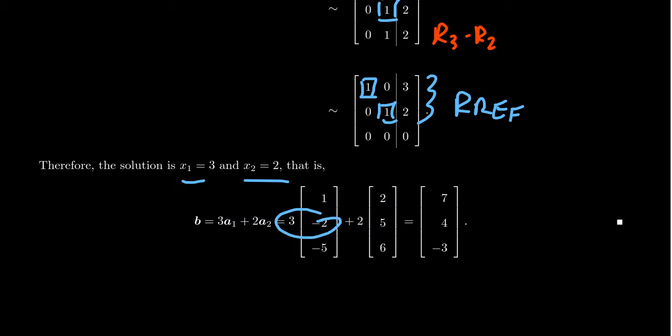3 times negative 2 is negative 6. 2 times 5 is 10. 10 minus 6 is 4. And then lastly, 3 times negative 5 is negative 15. 2 times 6 is 12. 12 take away 15 is negative 3. We, in fact, proved it here. We had a unique solution. And so, yes, the answer here is yes. b is inside the span.